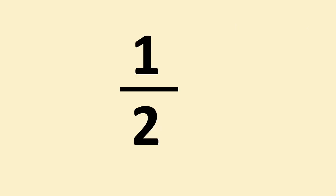First, we need to understand that one half is the same as saying one divided by two. So, to convert a fraction into a decimal number, we just divide the numerator, the top number, by the denominator, the bottom number.